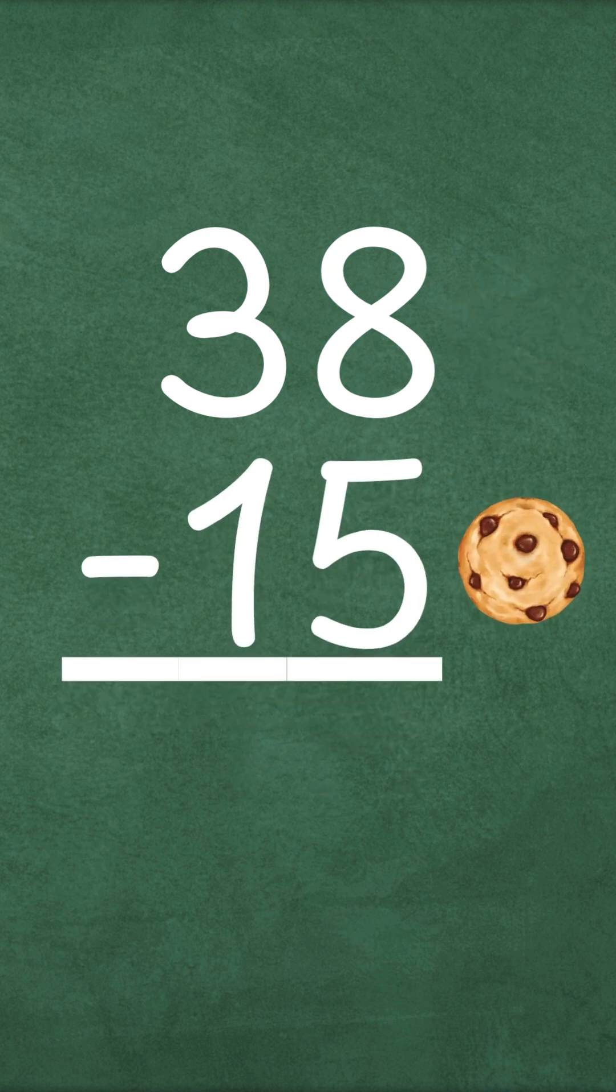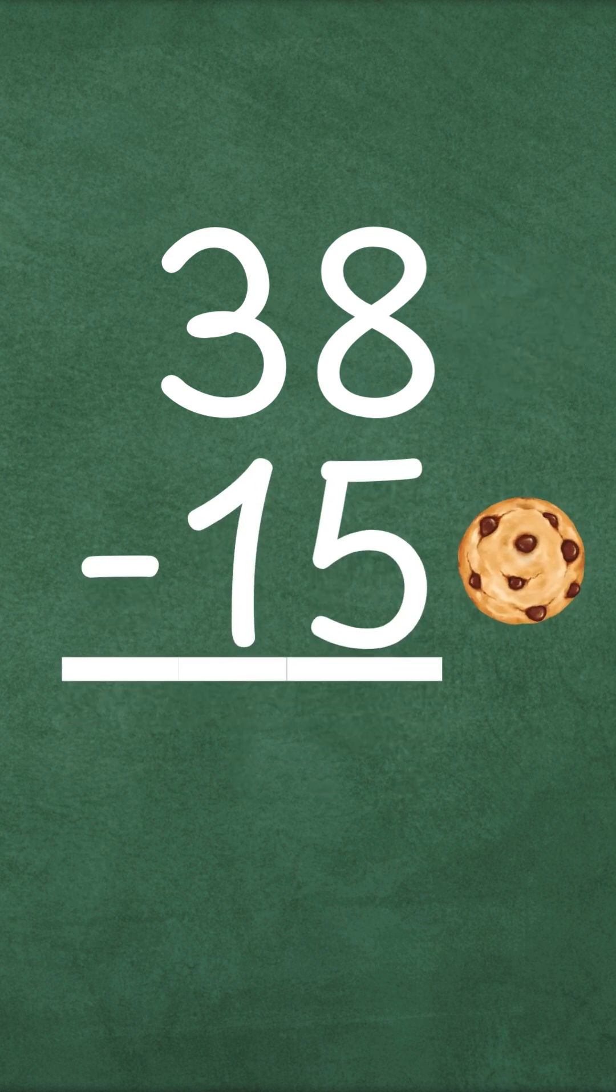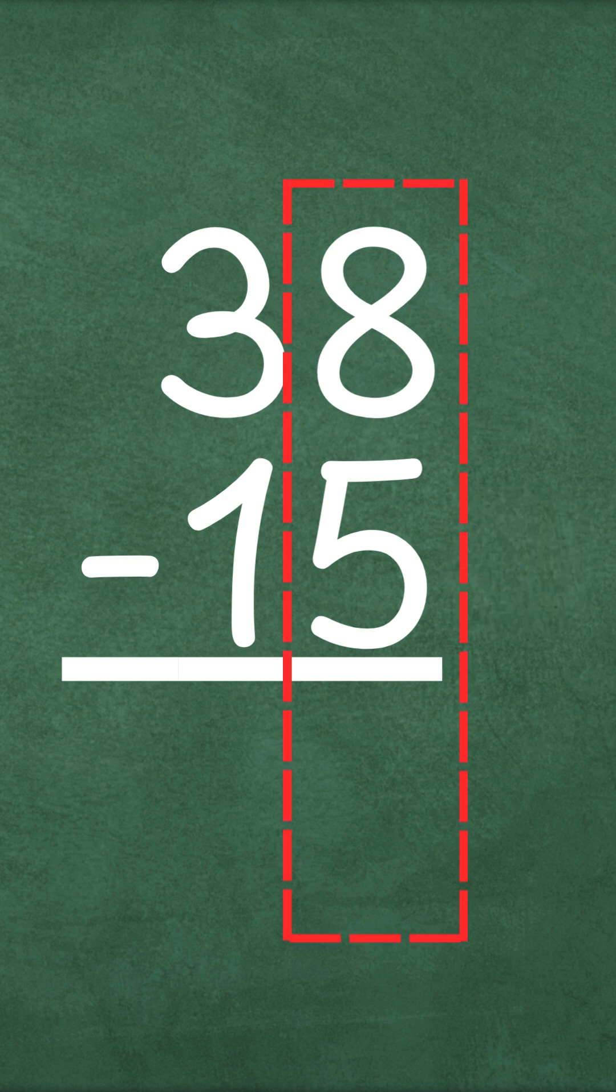First, we need to write the numbers down one on top of each other. Make sure the numbers are lined up just right. See how the ones are in the same column? The 8 is right above the 5. And the 10s are lined up too. The 3 is right above the 1.